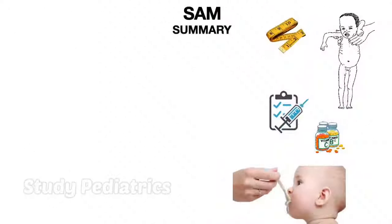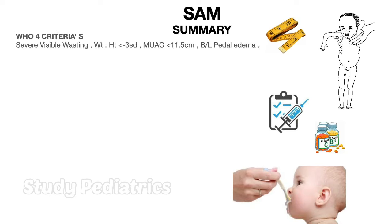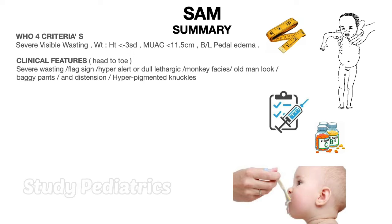Let's summarize what we have learned. WHO criteria for SAM: severe visible wasting, weight-to-height less than minus 3SD, MUAC less than 11.5 cm, or bilateral pedal edema — any one positive indicates SAM. Clinical features from head to toe: severe visible wasting, flag sign, hyper-alert or dull lethargic child, monkey facies, old man look, baggy pants, abdominal distension, and hyperpigmented knuckles. Not all patients will have all features, but some features will be present.